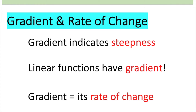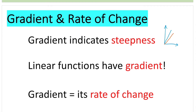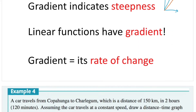Gradient and rate of change. We know that gradient indicates steepness — the greater the gradient, the steeper a linear function looks. For example, the blue line has a greater gradient compared to the orange line because it is steeper. Every linear function has a gradient, and the rate of change is essentially the gradient of that linear function. So to find the rate of change is essentially finding the gradient.